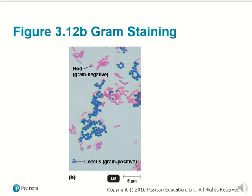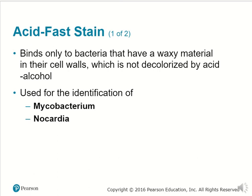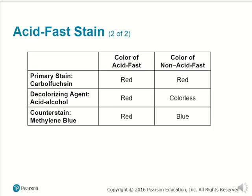Acid-fast stain is a different type of stain that binds only to bacteria that have a waxy material in their cell walls, which is not decolorized by acid alcohol. It's used in the identification of Mycobacterium as well as Nocardia. With a primary stain or carbolfuchsin, both acid-fast and non-acid-fast specimens appear red. Then you add a decolorizing agent such as acid alcohol — the acid-fast remains red, the non-acid-fast becomes colorless. Then the counterstain — applying methylene blue — the acid-fast agent would appear red, whereas the non-acid-fast agent would become blue.